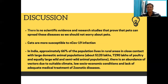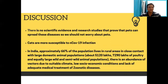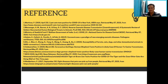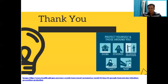At the same time, there are papers that show there is no scientific evidence or research studies proving that pets can spread these diseases, so we don't necessarily need to worry. However, what is concerning is that India is a hub of many animals: 66 percent of people live in rural areas with a large domestic animal population, and other factors may aggravate this situation. This is what I have highlighted in this paper. A big thank you — stay safe and help stop coronavirus.